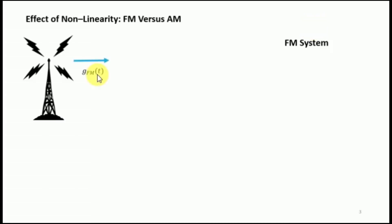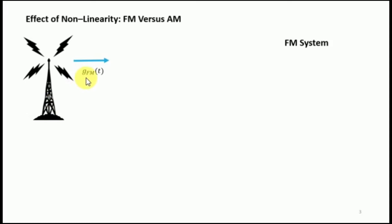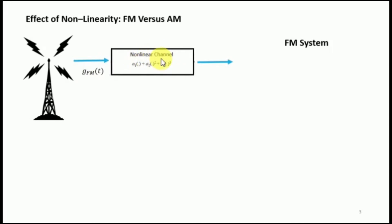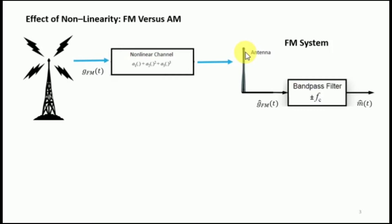Consider the FM system first. We have a broadcast station transmitting a frequency modulated signal G_FM(t). This signal passes through a nonlinear channel, which takes the input and multiplies it by coefficient a1, squares the input and multiplies by a2, cubes the input and multiplies by a3, then adds all these components together to produce the output.